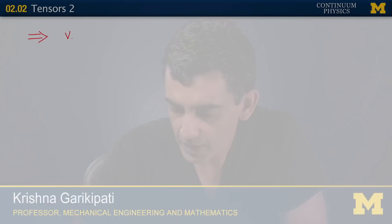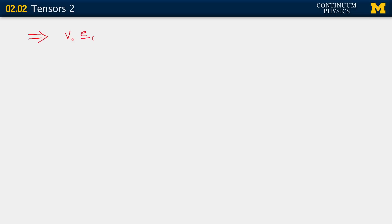So that expression from the previous slide can be written as follows. We can write V in terms of the basis as V_i E_i equals A, our newly introduced tensor, acting on U, which we write as U_J E_J. I've introduced indices, but I've taken care to use different indices: I for V and J for the representation of U. That will be very important going ahead, because using the same indices on both sides would lead to confusion and wrong results.